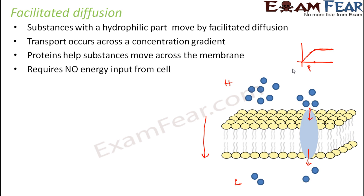This type of diffusion does not require any energy input from the cell, because diffusion is happening from a region of high concentration to low concentration. The only reason we need these proteins is to carry the particles through the hydrophobic part of the plasma membrane — no energy is spent in this type of diffusion.